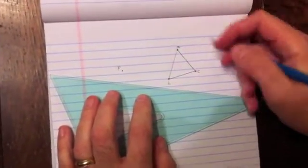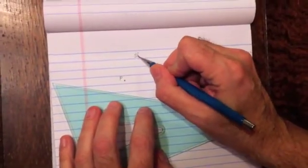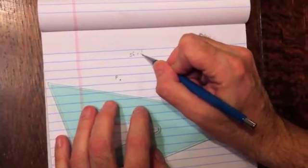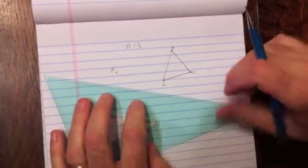We're going to do a dilation with a scale factor of one-half, and point P is going to be the center of dilation.